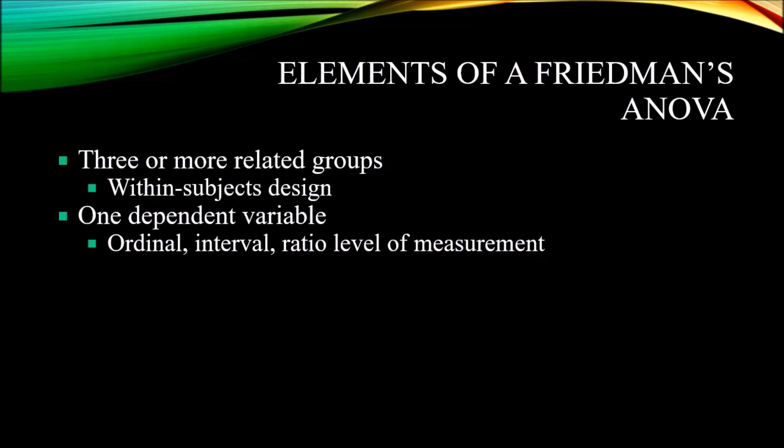Now let's look at the elements of Friedman's ANOVA. With Friedman's ANOVA, you have one independent variable and three or more related groups — you could think of that as three or more levels of the independent variable. This is a within-subjects design, not a between-subjects design, meaning the same participants are used throughout all assessments.